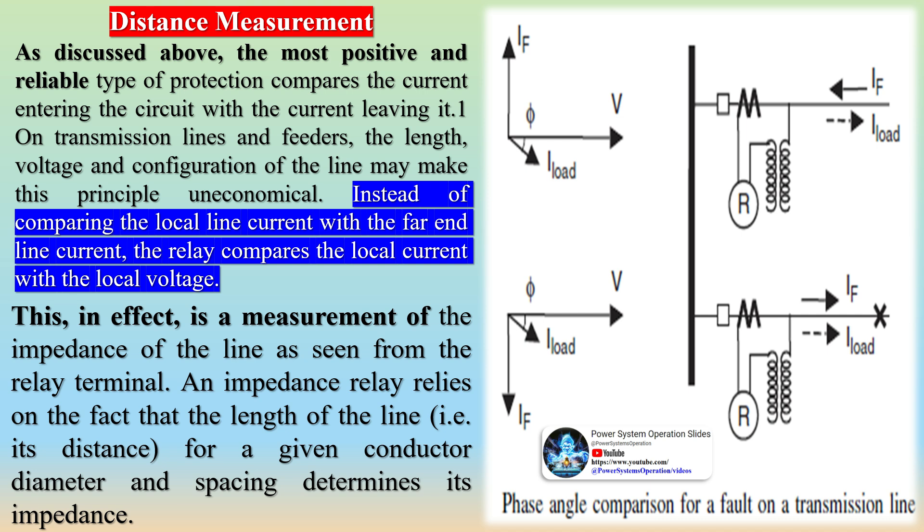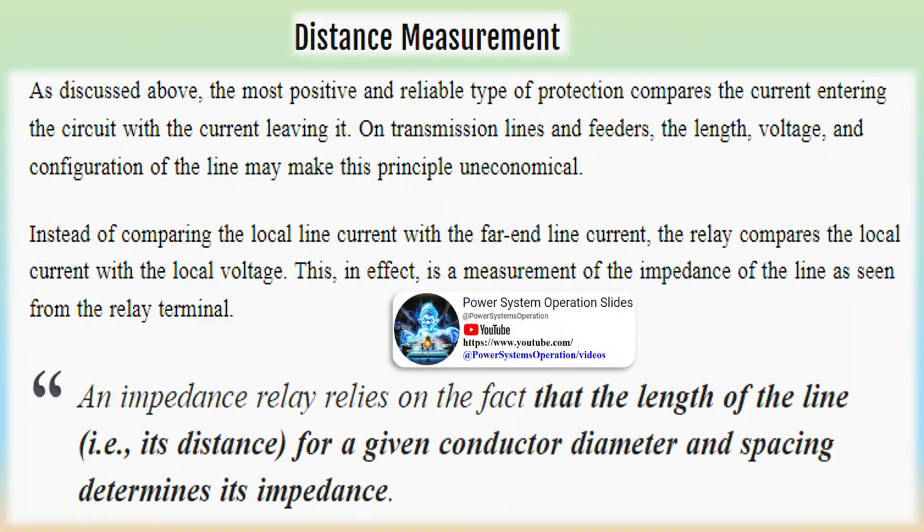Distance measurement. As discussed above, the most positive and reliable type of protection compares the current entering the circuit with the current leaving it. On transmission lines and feeders, the length, voltage, and configuration of the line may make this principle uneconomical.